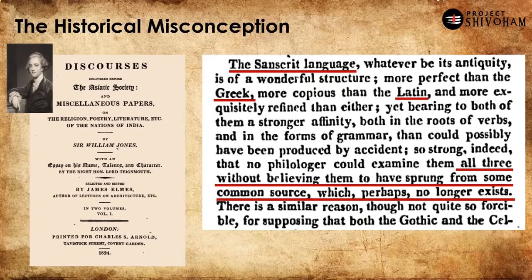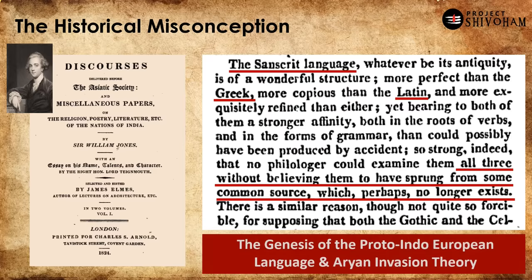Here is a page from the discourses of William Jones. I'm quoting: 'The Sanskrit language, whatever its antiquity, is a wonderful structure — more perfect than Greek, more copious than Latin, and more exquisitely refined than either.' What he is saying is that Sanskrit is more perfect and beautiful than Greek and Latin, the two foundational pillars of Western civilization. And here is the most important thing — he states that no linguist could examine all three, Sanskrit, Latin, and Greek, without believing them to have sprung from some common source which perhaps no longer exists. So William Jones is hypothesizing that Sanskrit, Greek, and Latin all have one common ancestor language which does not exist today.